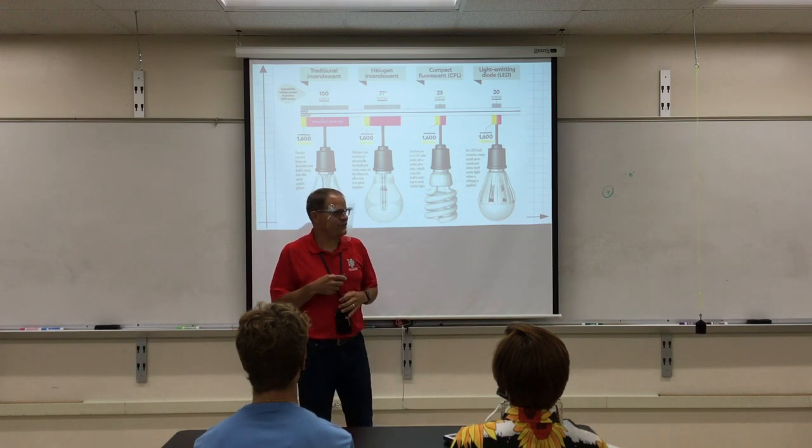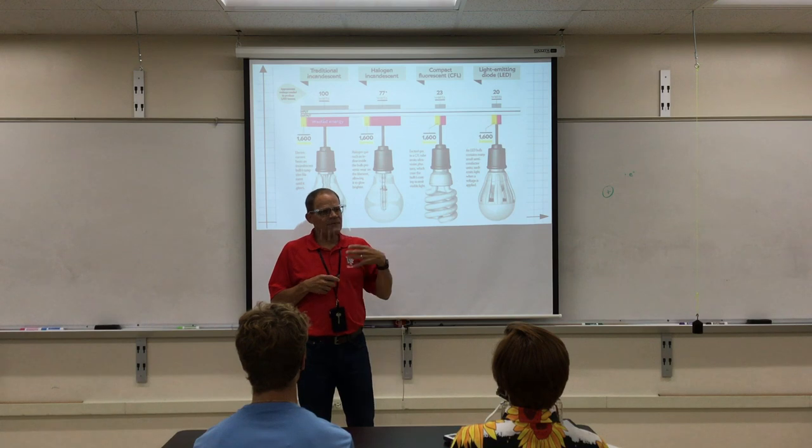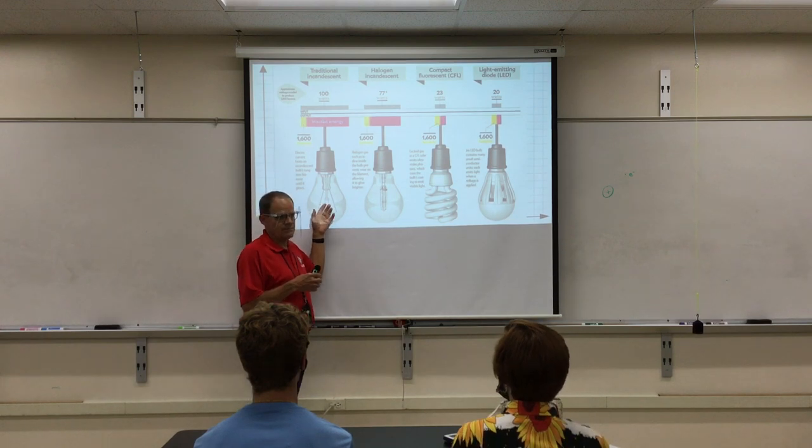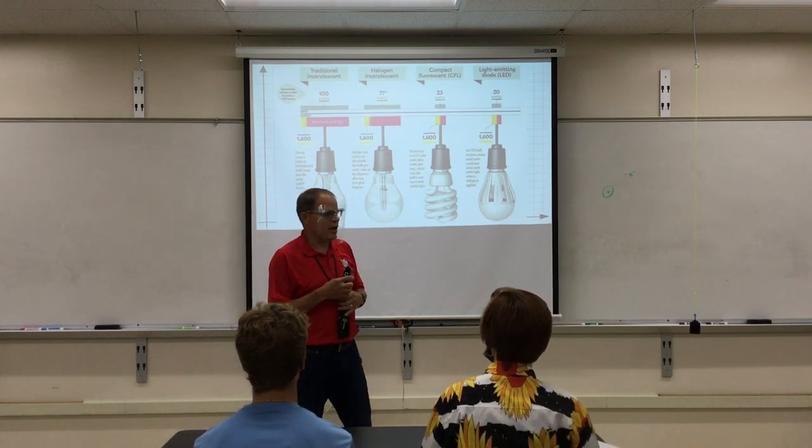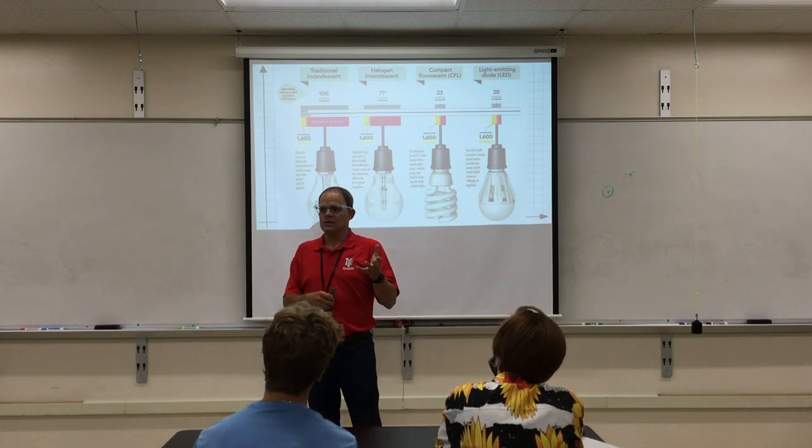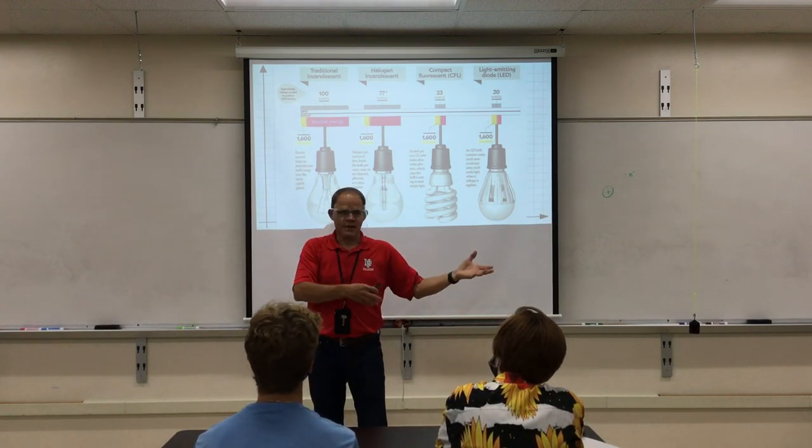Nowadays we have LEDs and they're even better than 20 now. This is a little old. They're down to 16 or 15. So you're only using about 15 joules every second to get the same amount of light as this guy using 100 joules per second. So that's an example of how we use power. You buy a light bulb based on the rate it converts energy from electricity to light and heat.